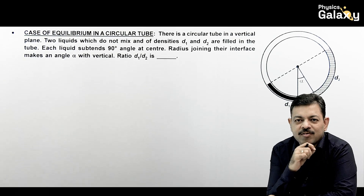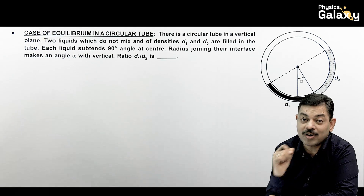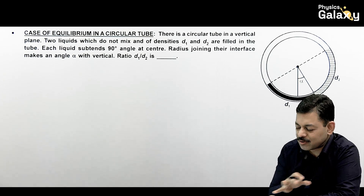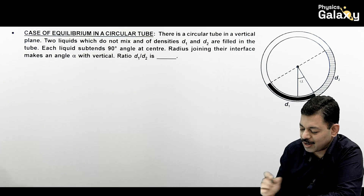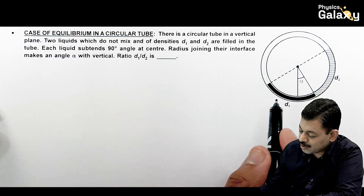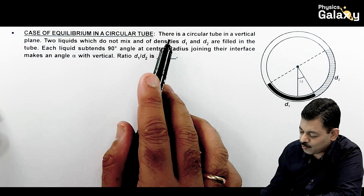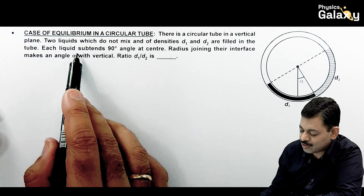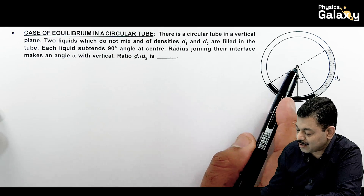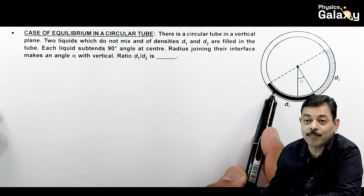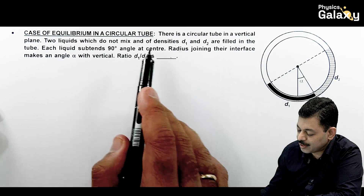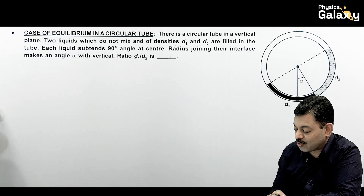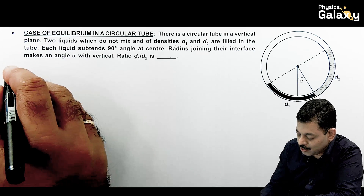This case has already been asked in both JEE Main and JEE Advanced. With a little patience the question can be easily handled. It is about the equilibrium of a circular tube. Two immiscible liquids of densities d1 and d2 are filled in a circular tube, each subtending an angle of 90 degrees at the center, so each liquid's length is πR/2. The radius joining their interface makes an angle α with the vertical. We need to find the ratio of densities at equilibrium.